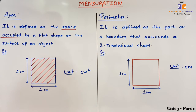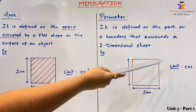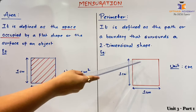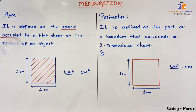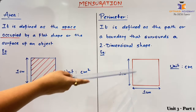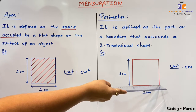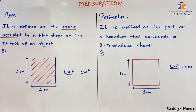Perimeter is defined as the path or boundary that surrounds a 2-dimensional shape. You can see the red boundary or border of the square — that is known as the perimeter. To find the perimeter of the square we add 1 cm + 1 cm + 1 cm + 1 cm, which gives us 4 cm.